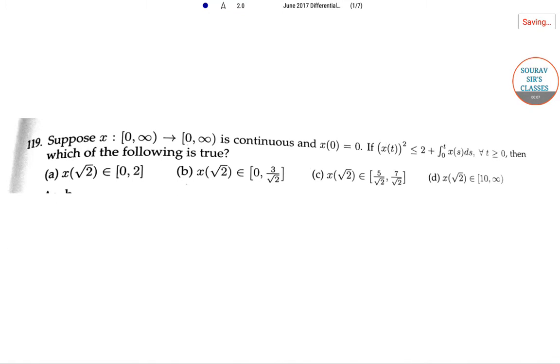The question is, suppose x from zero to infinity to zero to infinity is continuous and x(0) is equal to zero. If x(t) squared less than equal to two plus integration x(s) ds from zero to t for all t greater than or equal to zero, then which of the following is true.